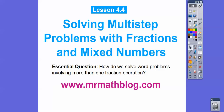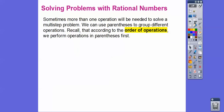So how do we solve word problems that involve more than one operation with fractions? Solving problems with rational numbers — rational numbers typically means fractions or decimals, but also whole numbers or integers, because any integer can be expressed over one. Sometimes more than one operation will be needed to solve multi-step problems. We can use parentheses to group different operations, and remember that according to the order of operations, we perform the operations in parentheses first.